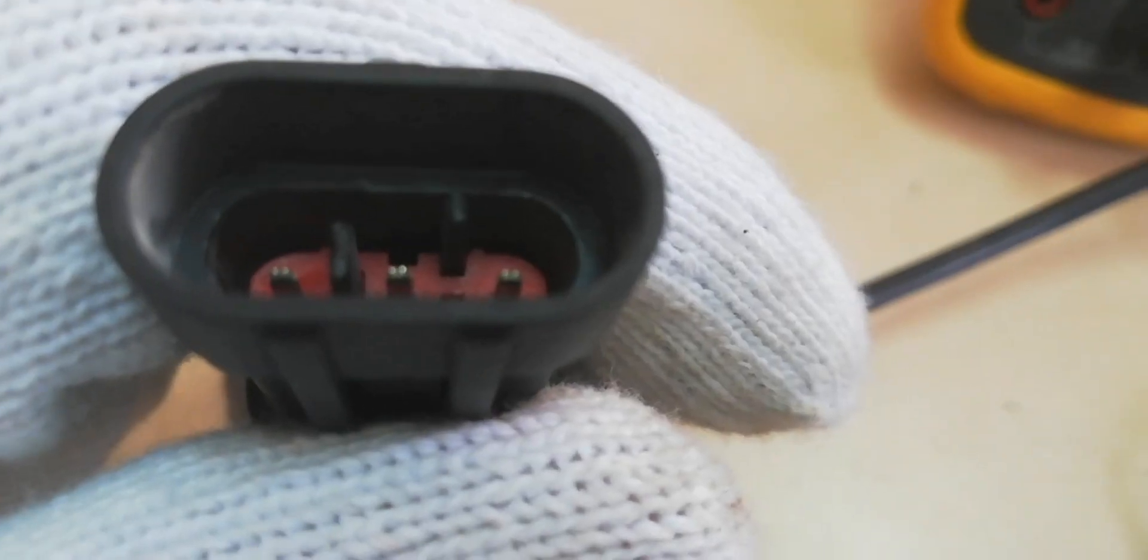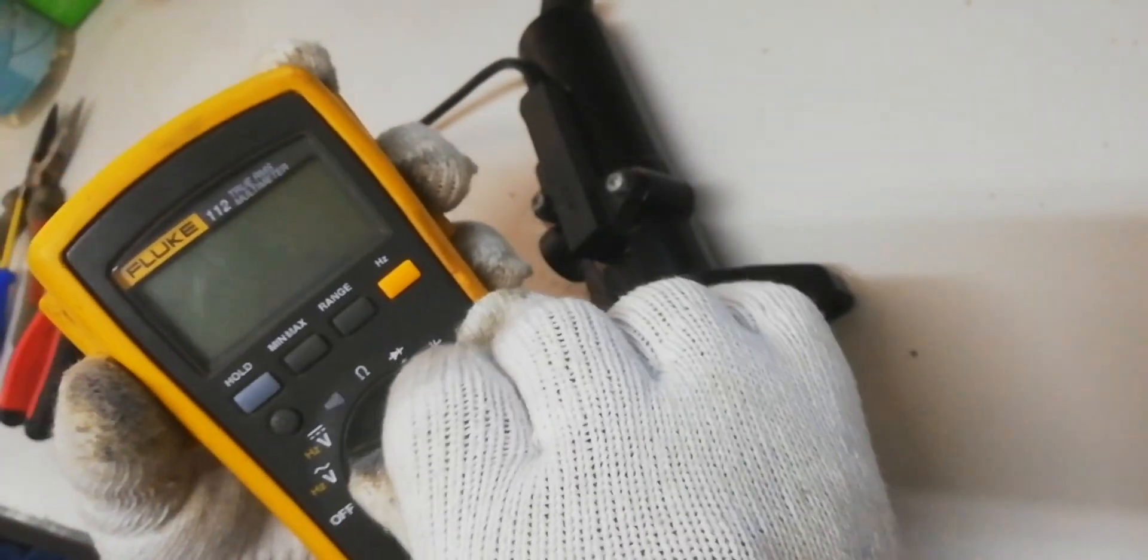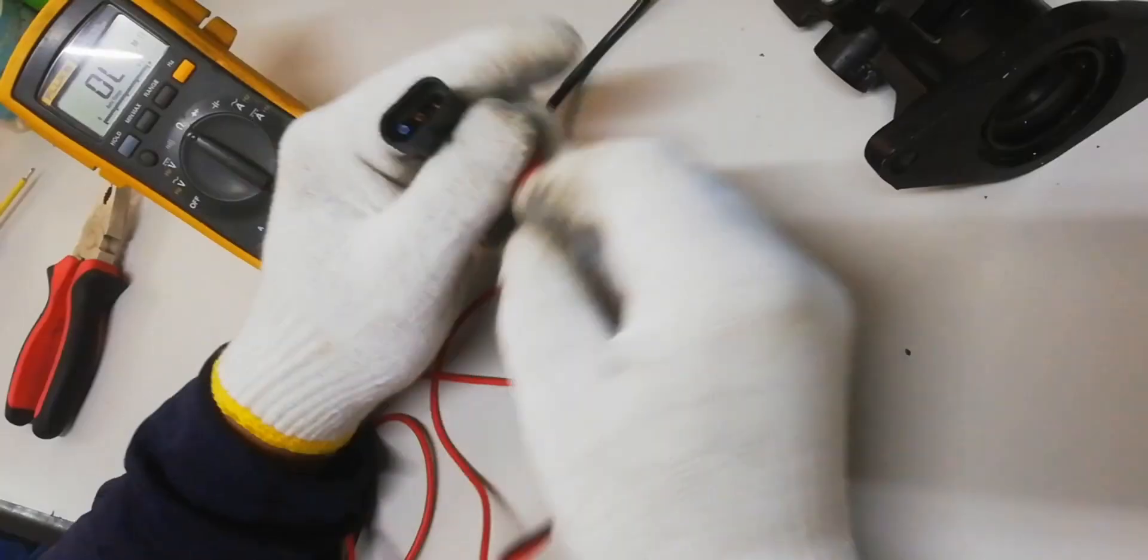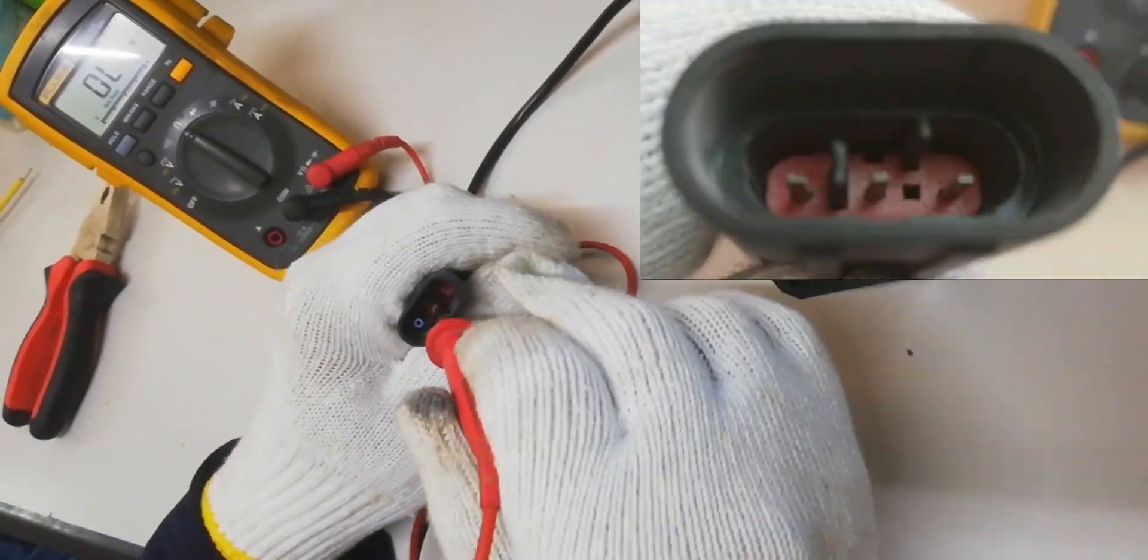Now we will proceed to check the clutch pedal position sensor on how it works. Set the multimeter tester to ohms. Connect the test probe as shown on the screen.